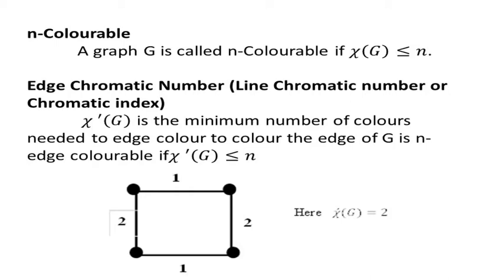The next definition is H chromatic number. The H chromatic number is also called the line chromatic number or chromatic index. Note that the chromatic number is different from the chromatic index. It is denoted by chi'(G). The chi'(G) is the minimal number of colors needed to color the edges of a graph.